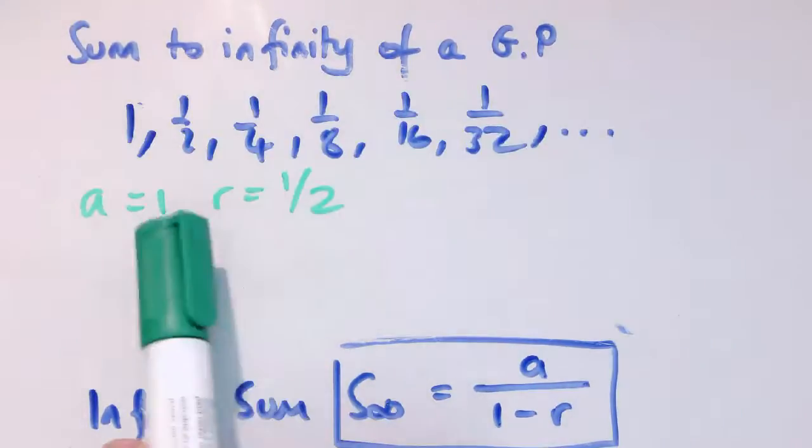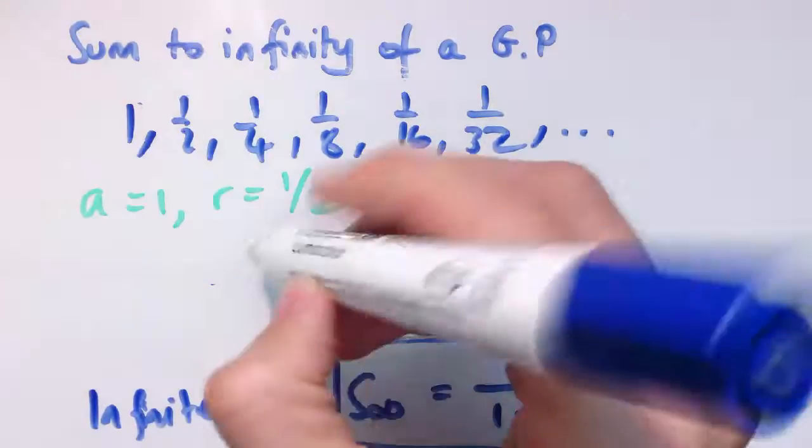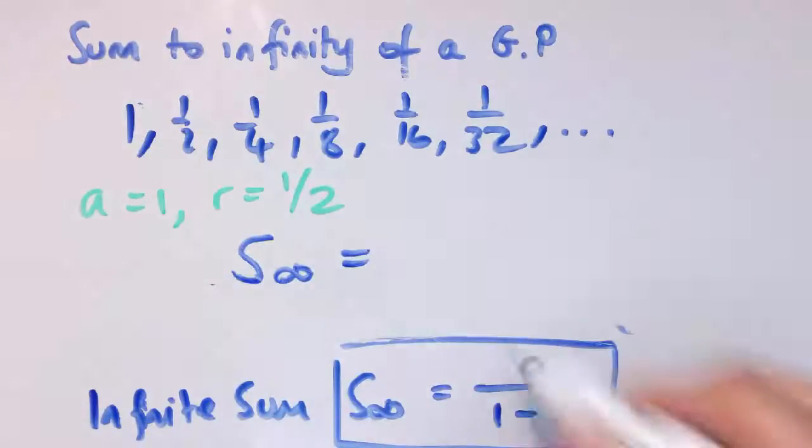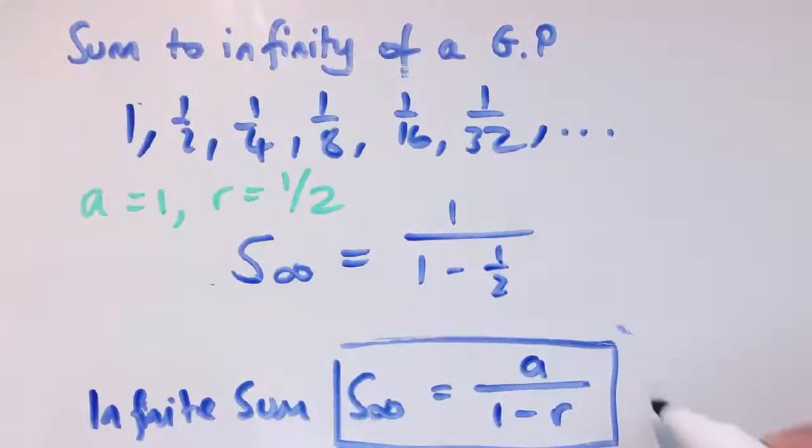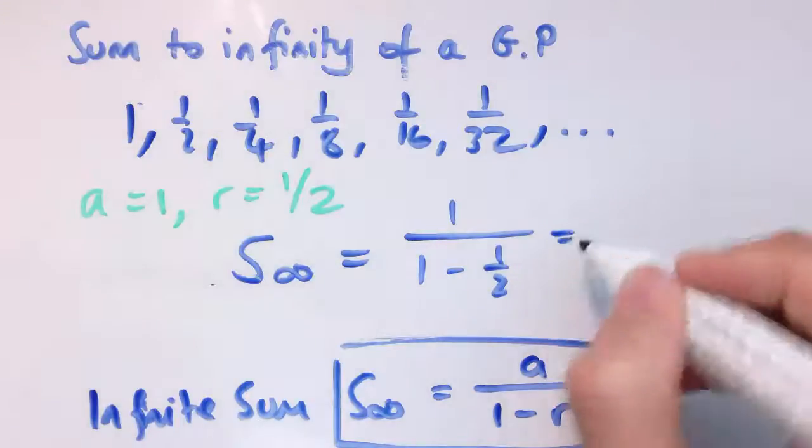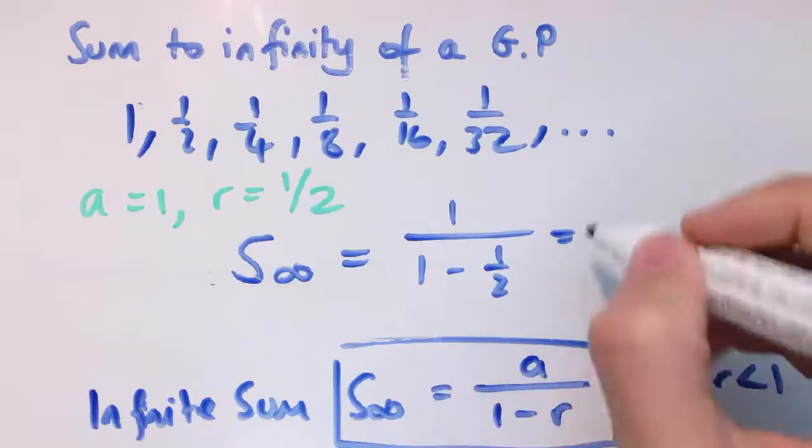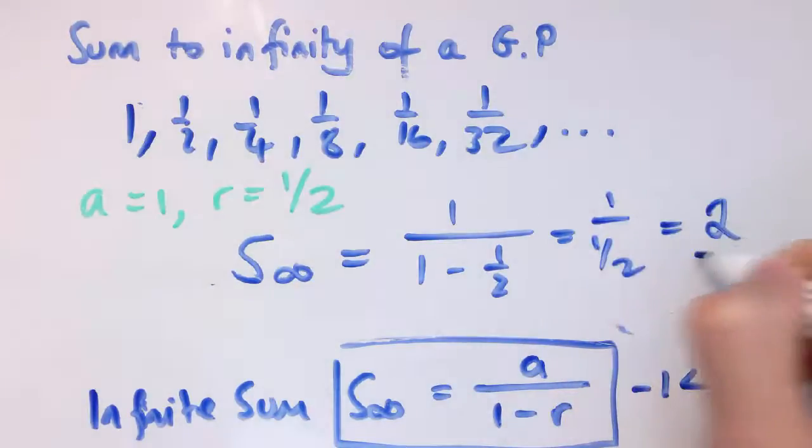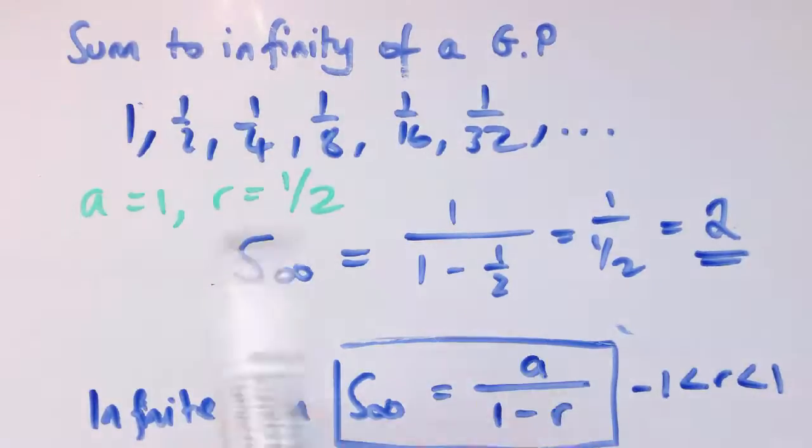Going back to our original example here, we had this sequence, a equals 1 and r equals 1 half. The sum to infinity given by this formula says, well, a is 1, r is 1 half, r is between minus 1 and 1, so that condition is satisfied. This is then 1 divided by 1 minus 1 half, so that's 1 divided by 1 half, which is 2, which is the same conclusion as we came to before. Of course, this formula now could be used for any value of a and any value of r between minus 1 and 1.